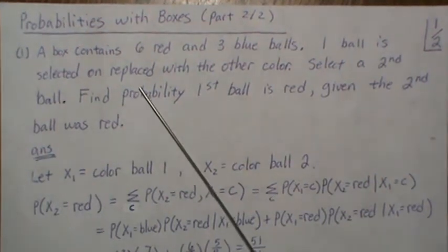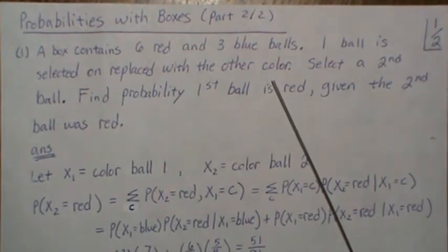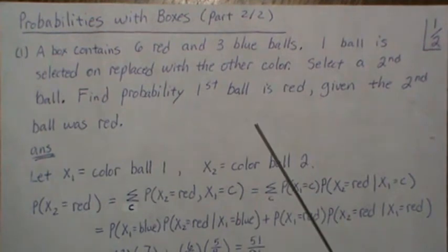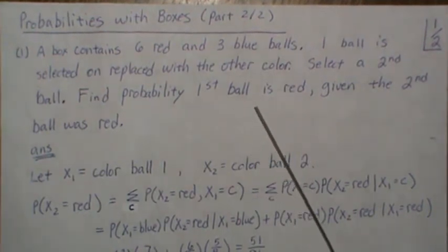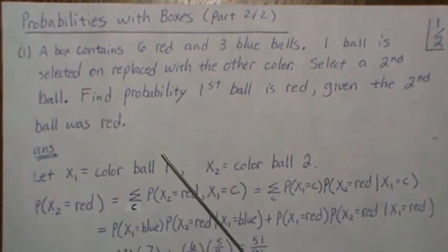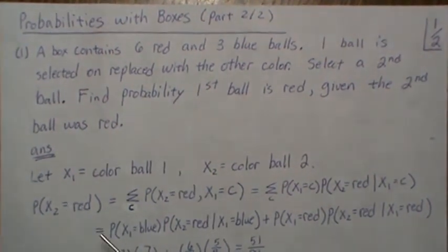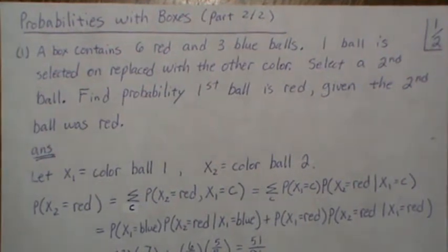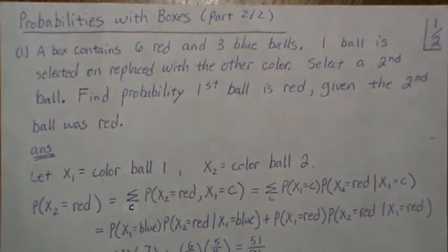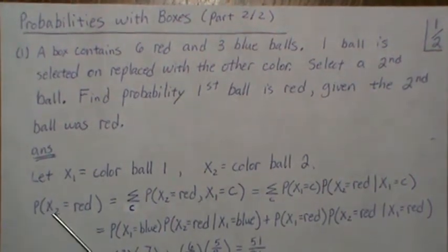Problem one: a box contains six red and three blue balls. One ball is selected and replaced with another of the other color, then a second ball is selected. Find the probability that the first ball is red given that the second ball was red. So let X1 be the color of ball 1 and X2 be the color of ball 2.